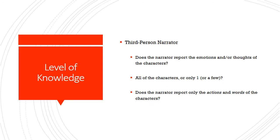Where third-person narrators get complicated is in their level of knowledge — what do they know about the other characters? While first-person is necessarily limited only to their own perspective, a third-person narrator may or may not know a lot of different things. Ask yourself: Does the narrator report the emotions and/or thoughts of the characters, or do they only report their actions and words? Is there a sense of what's going on inside the characters, or do we just see them from the outside, like a camera? And does the narrator report all characters' emotions, or only one or a few?